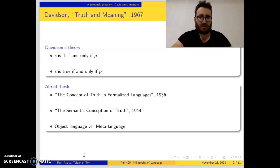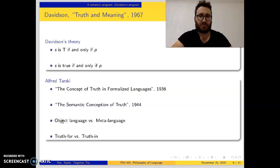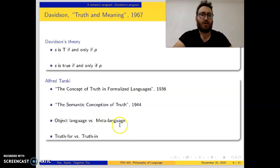In Tarski's definition of truth, there is this important object language / meta-language distinction. Truth is defined for sentences in the object language, but it cannot be defined in the object language itself — that would lead to paradoxes. Instead, it is defined in a meta-language. If you are interested in the truth of any sentence in the meta-language, then you need a meta-meta-language.